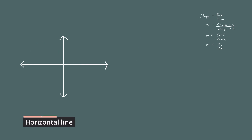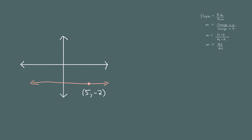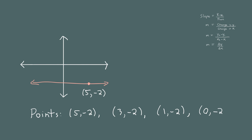Now let's look at a horizontal line. Let's say one point on the line has coordinates (5, -2). Since this is a horizontal line, any point with the same y coordinate is on the line. So (3, -2), (1, -2), and (0, -2) are all on the line — you could continue on forever. We can pick any two of these points to compute the slope.